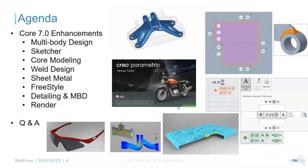On the agenda, the plan is to cover the core areas like sketcher, modeling, assembly design, sheet metal, surfacing, and detailing. I also want to start with one of the big enhancements in CREO 7: multi-body design, which has been a major enhancement in the core area compared to CREO 6.